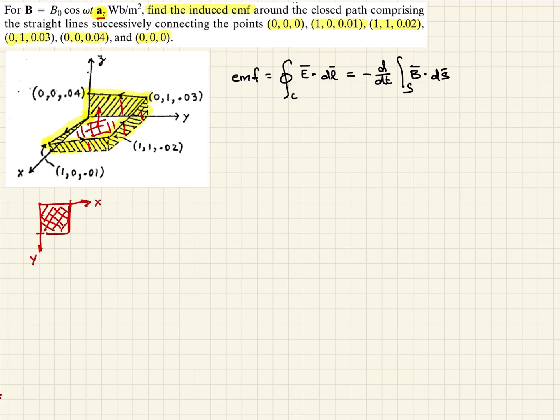Writing this mathematically, we have EMF equals the negative time derivative, integrated from x=0 to 1 and y=0 to 1. We define the surface element dS in x and y, and our magnetic field is B₀cos(ωt)âz dotted with dx dy âz.